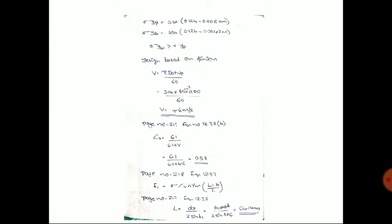The velocity of the pinion is calculated using v = π·d·N / 60. Substituting the diameter of the pinion (80 mm) and rpm (1100), we get velocity v = 4.6 m/s.